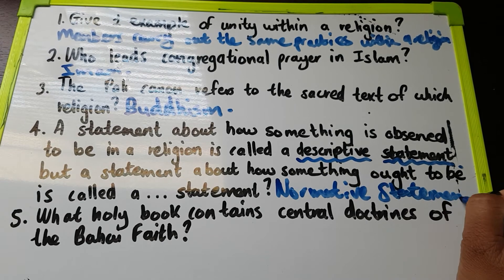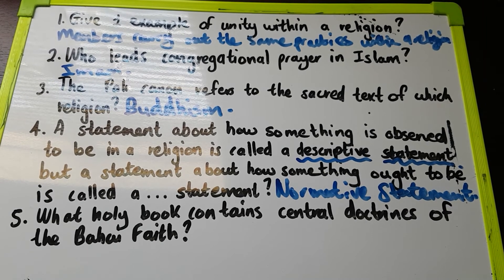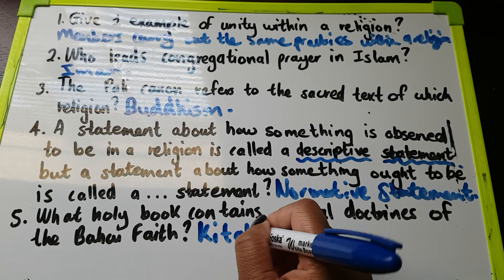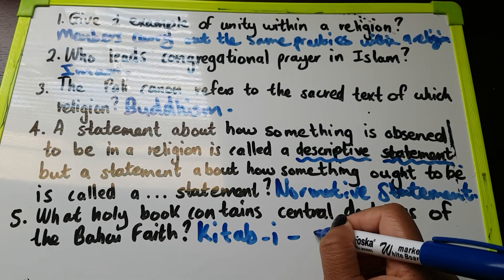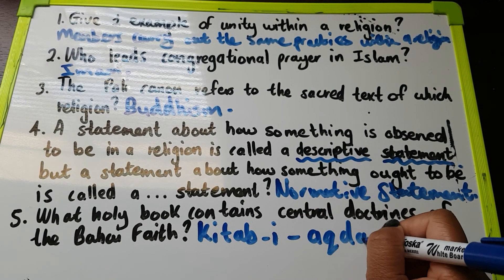Question number five: What holy book contains central doctrines of the Baha'i faith? We call this book the Kitab-i-Akdas.